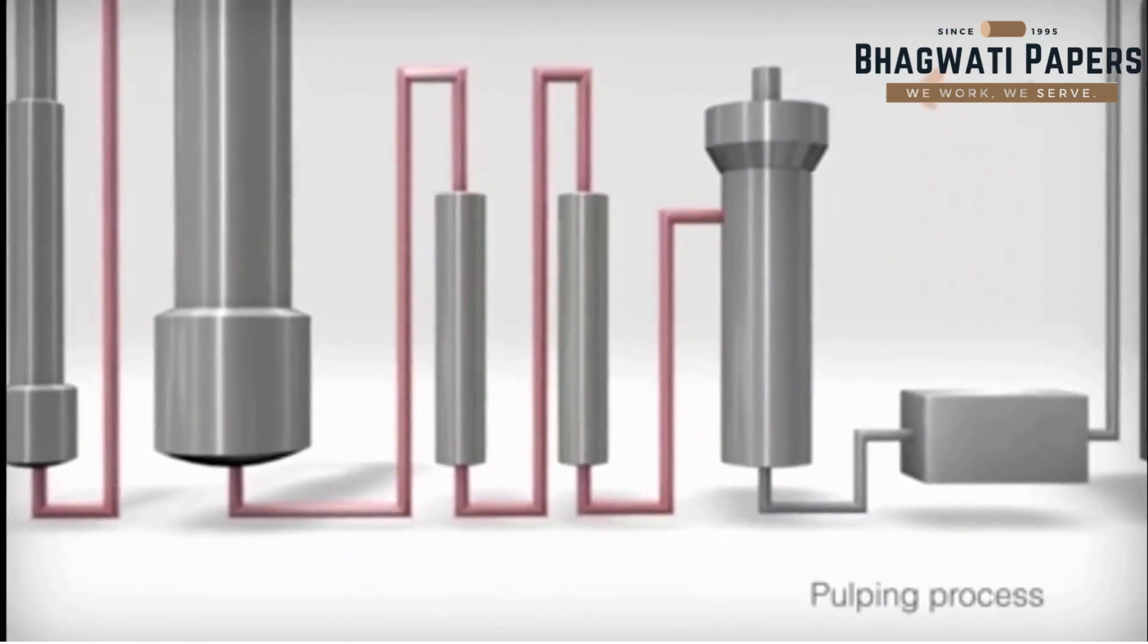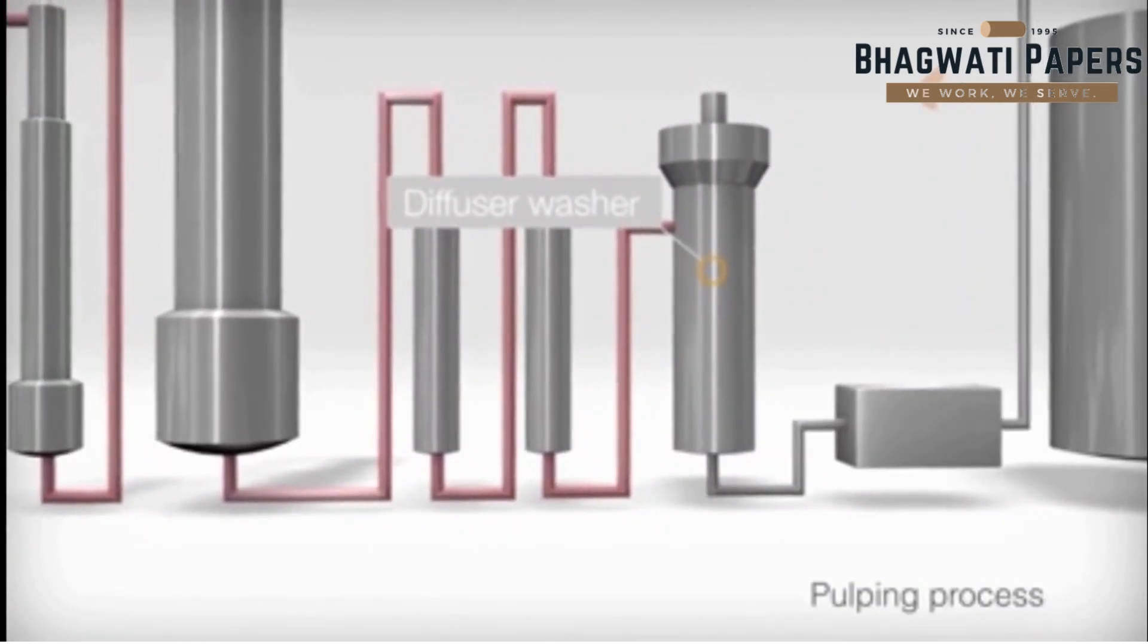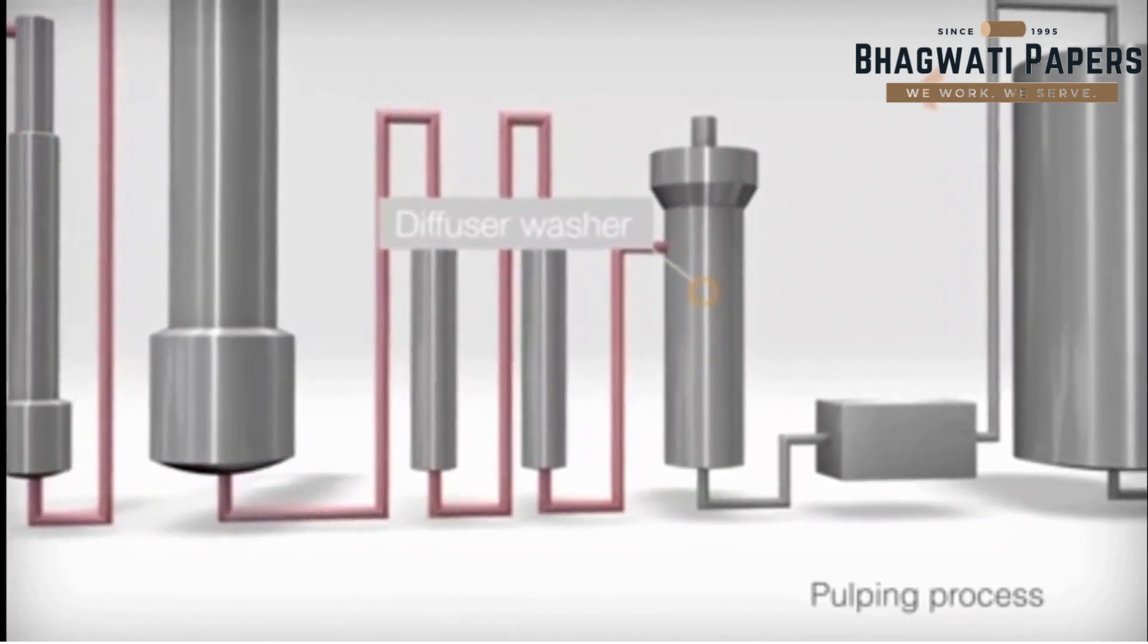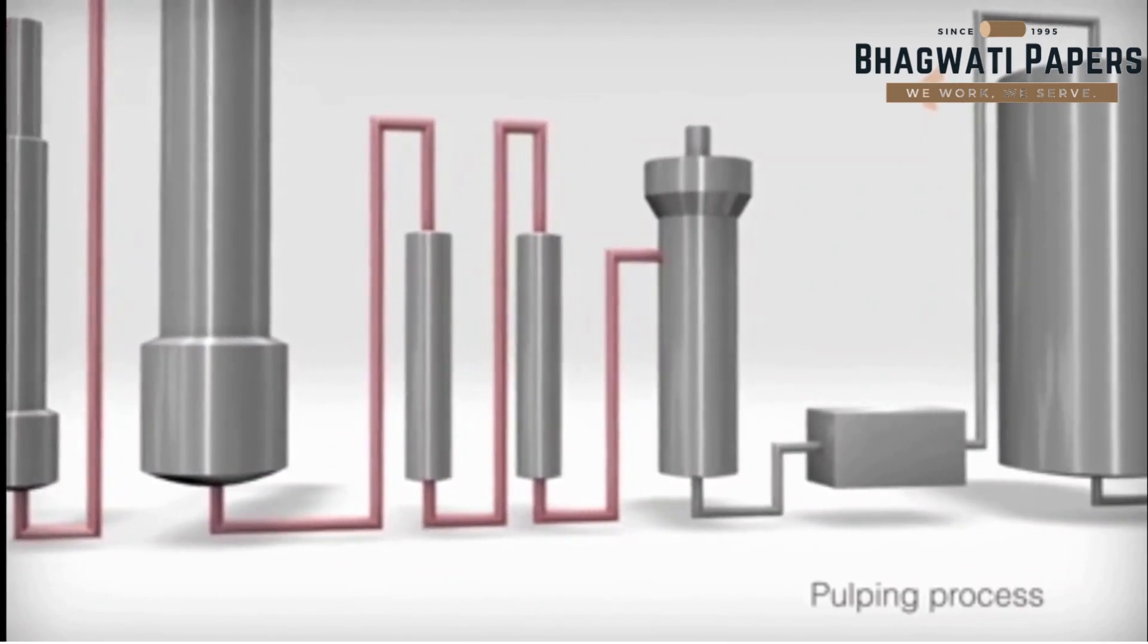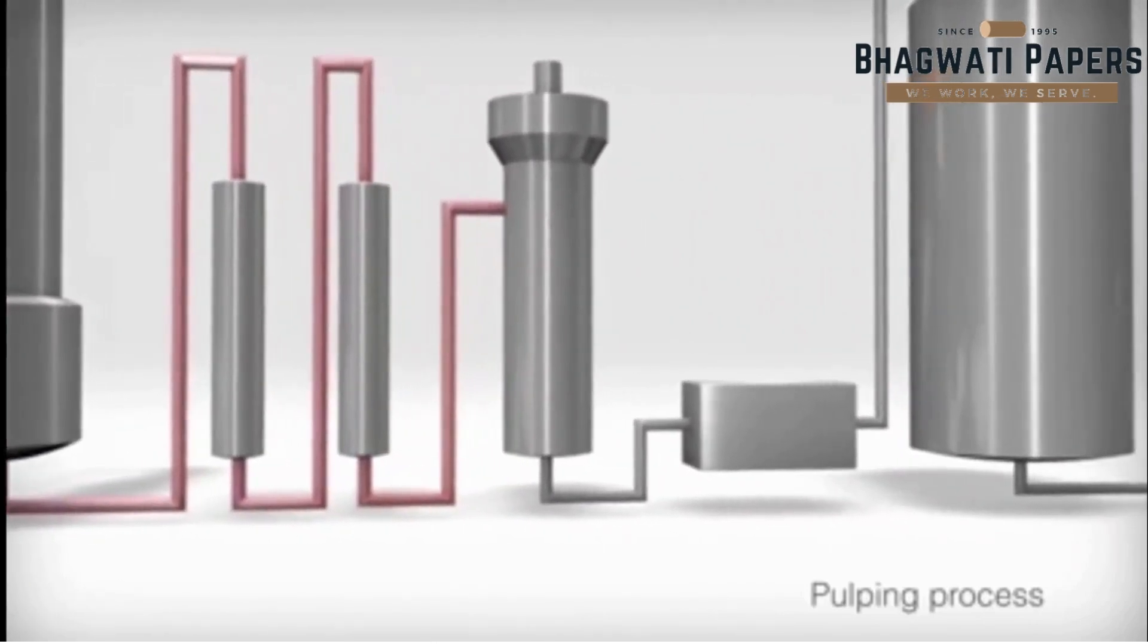In the following washing stages, the lignan compounds dissolved in the cooking liquor are washed out of the pulp. Around 99% of the used cooking chemicals are recovered. During this process, both steam and electricity are produced.